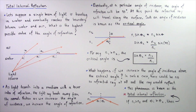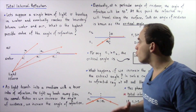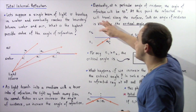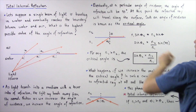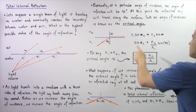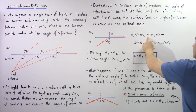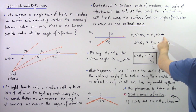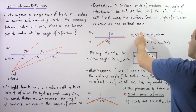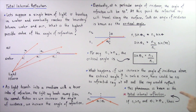How exactly can we calculate what the critical angle is for a particular set of index of refraction values? Let's begin by applying Snell's law. Snell's law tells us that the product of N1 and the sine of the angle of incidence is equal to N2 multiplied by the sine of the angle of refraction. We're looking for the critical angle, given by theta_C, where C stands for critical.